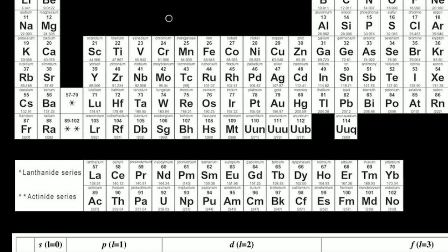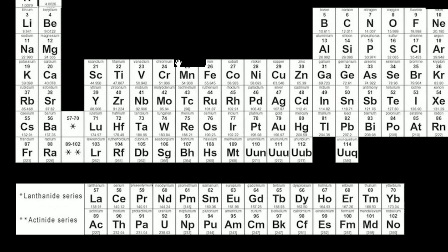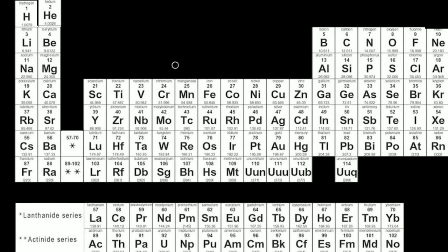Hi and welcome back. I just made the video on the F block elements and their electron configurations, and I realized I need to go over something first. I have to cover a type of notation called nearest noble gas, or nearest previous noble gas electron configuration.